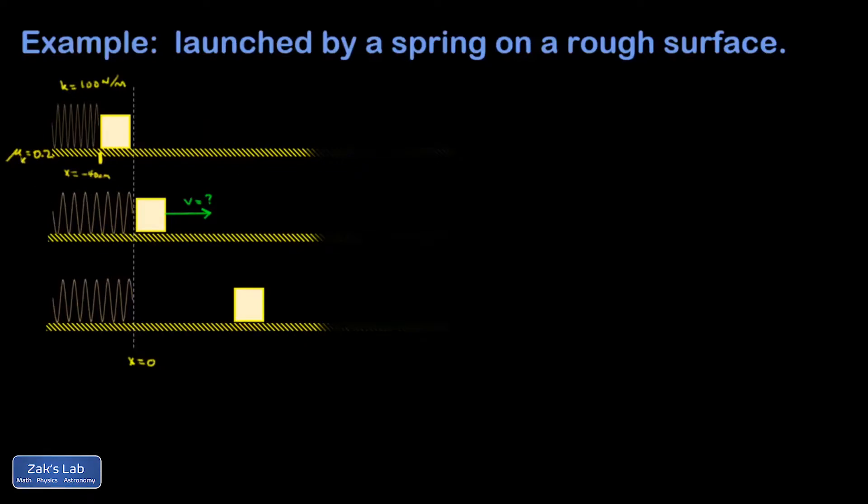In this problem, we have a block launched by a coiled spring. It's initially compressed by 40 centimeters from its equilibrium length, which I labeled with a dashed line at x equals 0. It has a constant of 100 newtons per meter. And this time, the surface is rough. So I have a kinetic friction coefficient of 0.2.